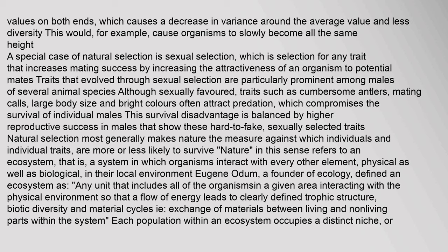Natural selection most generally makes nature the measure against which individuals and individual traits are more or less likely to survive. Nature in this sense refers to an ecosystem — a system in which organisms interact with every other element, physical as well as biological, in their local environment. Eugene Odum, a founder of ecology, defined an ecosystem as 'any unit that includes all of the organisms in a given area interacting with the physical environment so that a flow of energy leads to clearly defined trophic structure, biotic diversity, and material cycles.' Each population within an ecosystem occupies a distinct niche with distinct relationships to other parts of the system.